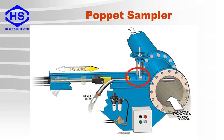This is a poppet type sampler. There is a slotted tube which is driven into the slurry flow via a fast acting actuator, and a portion of the process stream is then extracted.